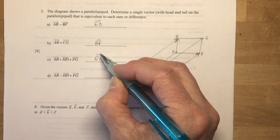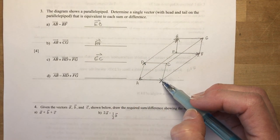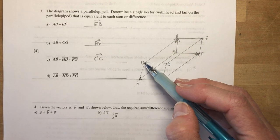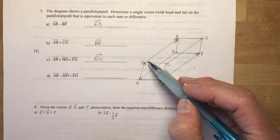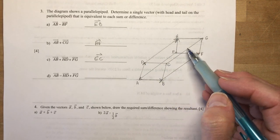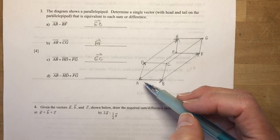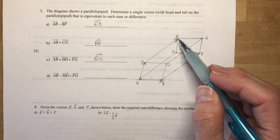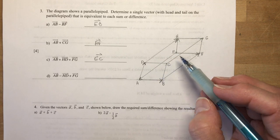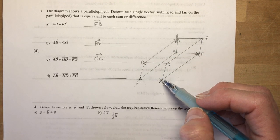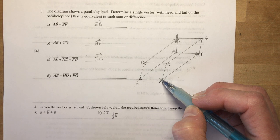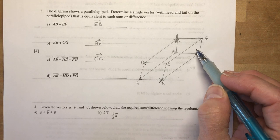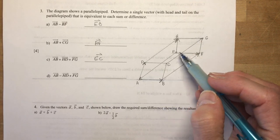Now this time I want to do AB and I want to do minus HD. So HD minus HD would be going in this direction. So either DH, CG, BF, AE. Those are all going in the same direction as HD, the negative of HD. So I'm going to choose AB to start. Negative HD is the same thing as BF and then add FG and I end up with AG.